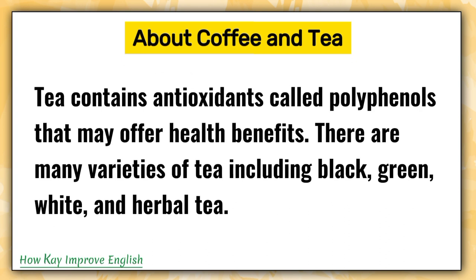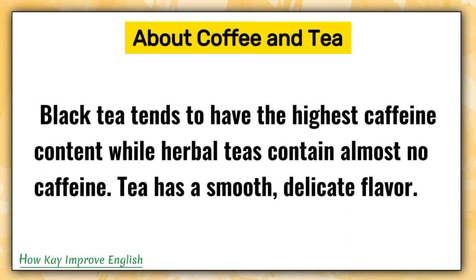Tea contains antioxidants called polyphenols that may offer health benefits. There are many varieties of tea including black, green, white, and herbal tea. Black tea tends to have the highest caffeine content while herbal teas contain almost no caffeine. Tea has a smooth, delicate flavor.